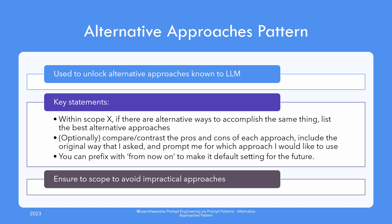Optionally, you can add statements like: compare and contrast the pros and cons of each approach, include the original way that I asked, and prompt me for which approach I would like to use. You can also add the prefix 'from now on' to make it a standard way of response from ChatGPT. Adding scope to the prompt is important to add context for the question, intended outcome and goals, and removing any approaches that you already know would be of no value to you.